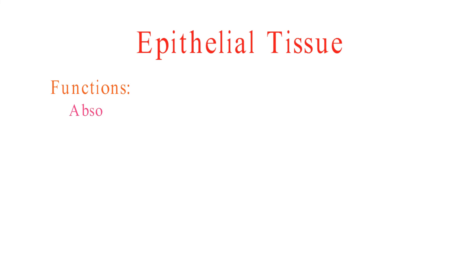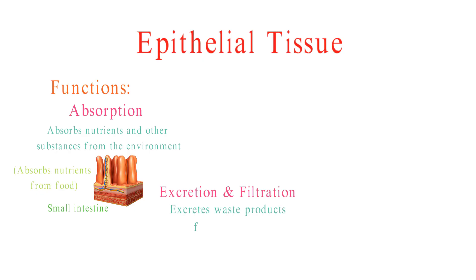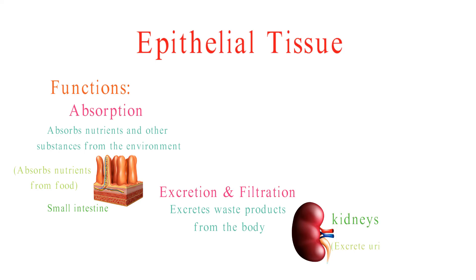Epithelial tissue also absorbs nutrients and other substances from the environment. For example, the small intestine absorbs nutrients from food. It also excretes waste products from the body; for example, the kidneys excrete urine, which contains waste products from the blood.